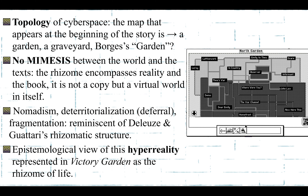About the space occupied by this specific, different kind of rhizome that we find in Victory Garden, we have a topology of cyberspace. The map that appears at the very beginning of the story may have different meanings for different scholars. It has received the symbolism of a regular garden; for others it has been regarded as a graveyard, since the backdrop of this story is a war. Some others have seen it as Borges' own garden of forking paths, which makes sense considering the relationships that Moulthrop himself draws with Borges' story.